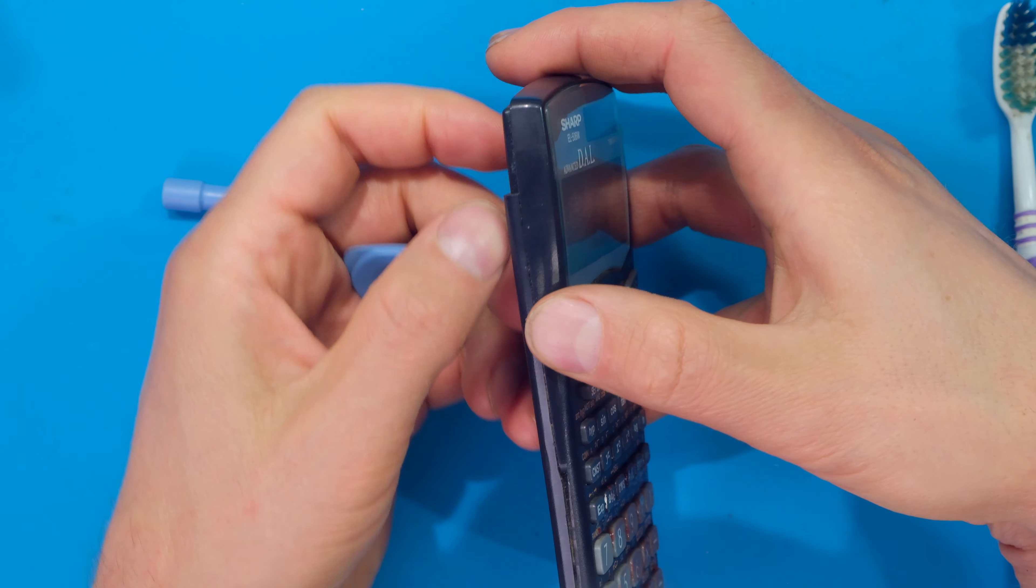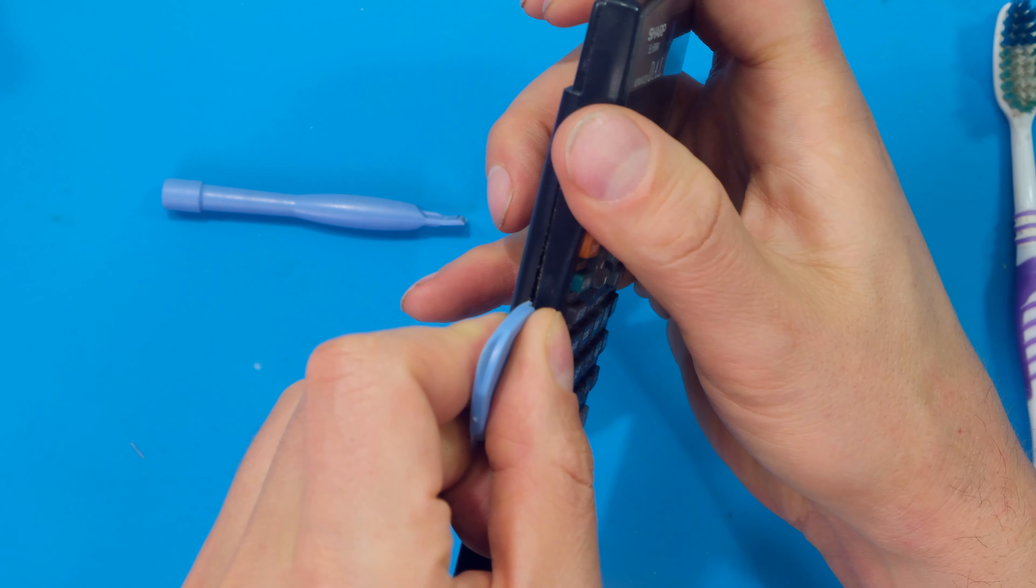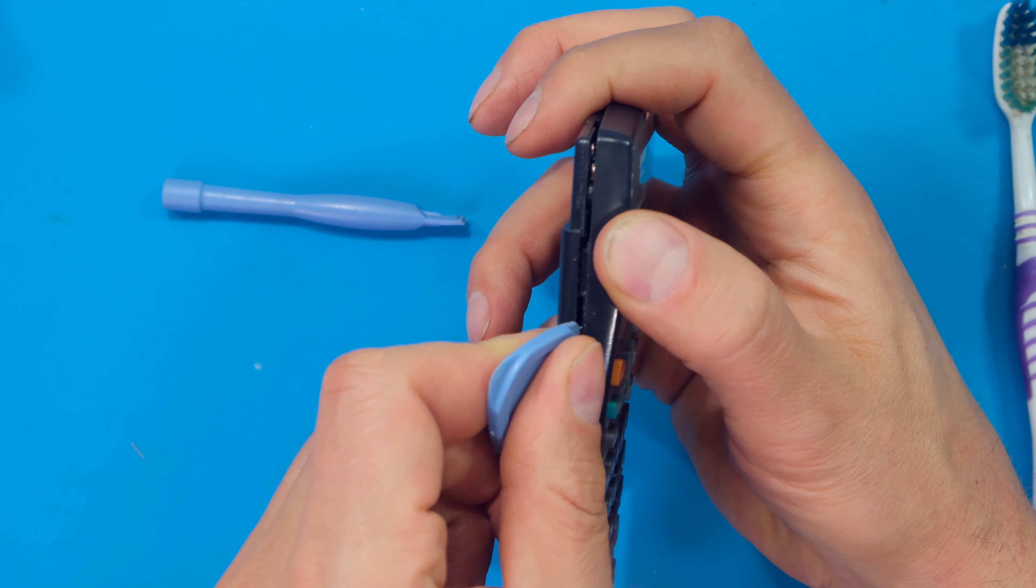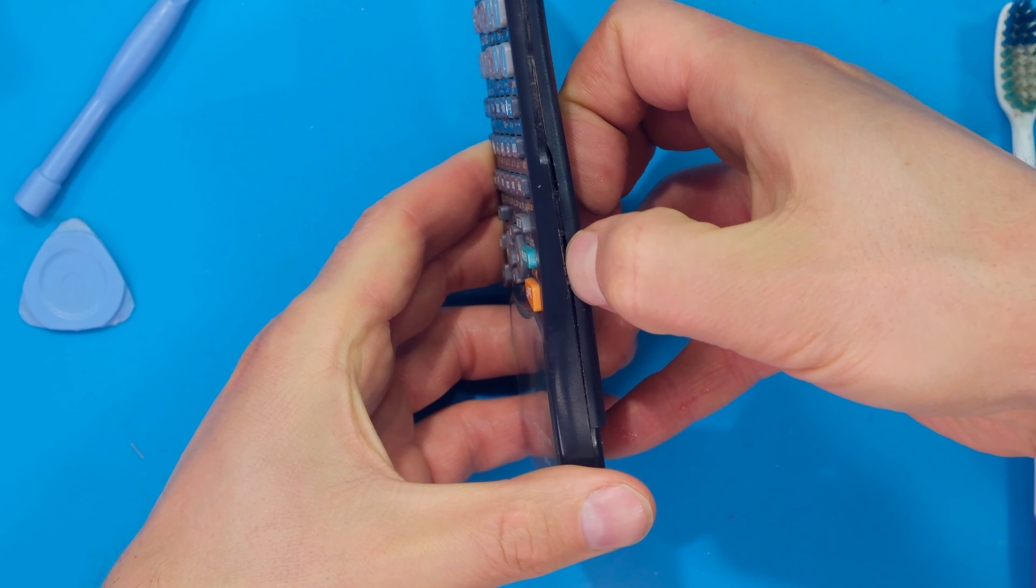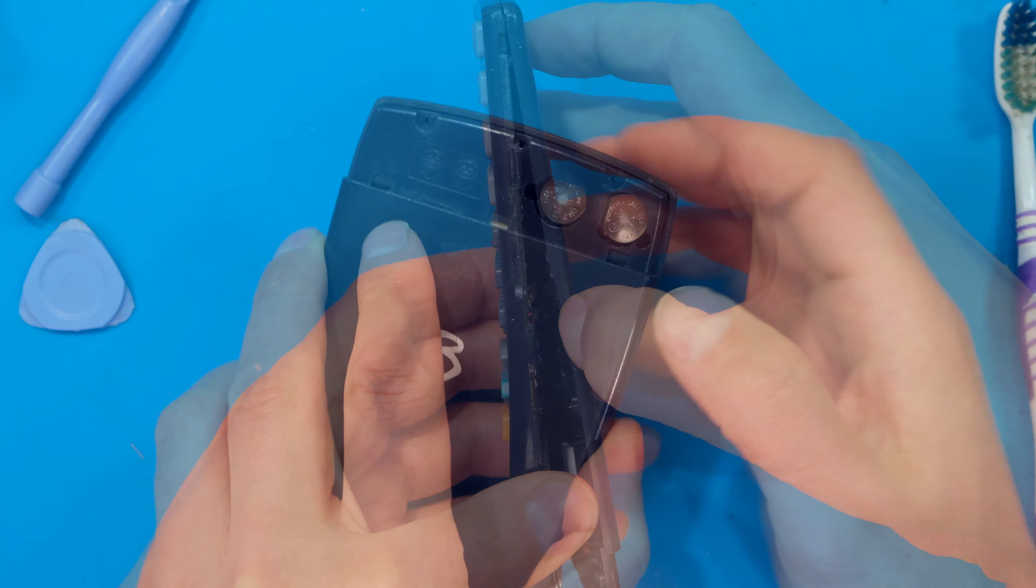Now on this calculator I need to separate the back cover from the front cover, so you can use pry tools and wedge it in the gaps here. I just run it along the seam and the cover is popping off. Most people don't have those tools, so you can also just use your nail. Just be careful on some units - it wants you to remove the batteries first.